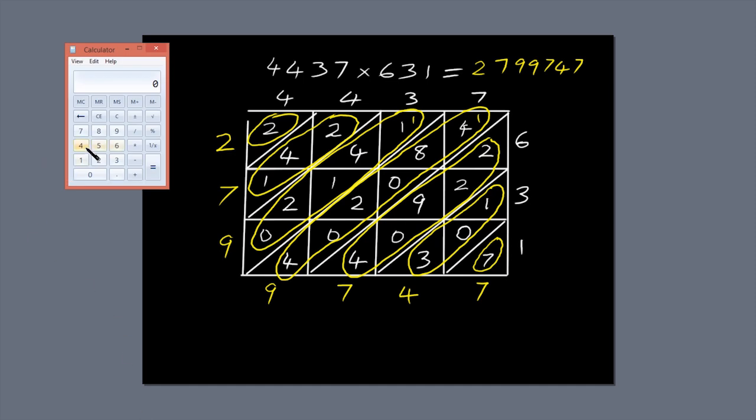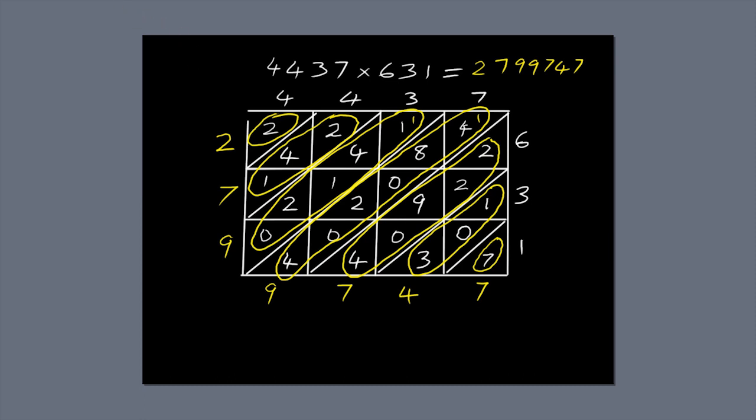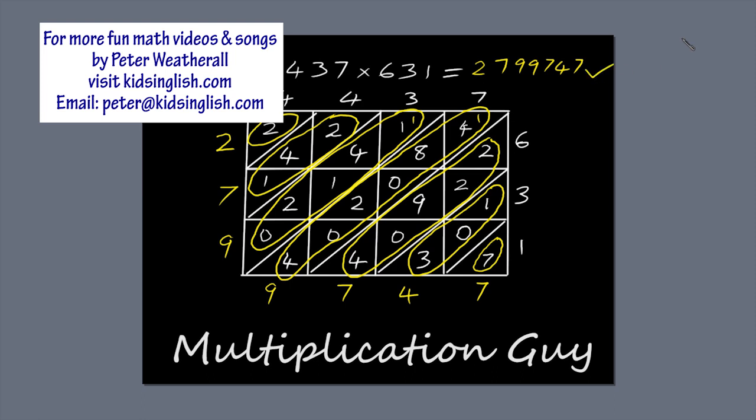I'm going to check the answer on my calculator, but I'm allowed to do that because I'm not on board the Titanic. 4437 times 631 equals 2,799,747. So the answer's correct. That's why they call me the Multiplication Guy. Bye.